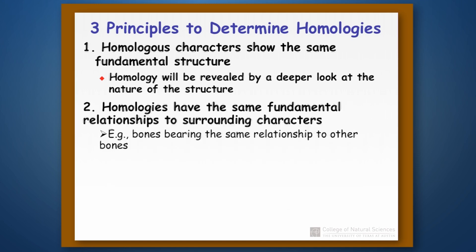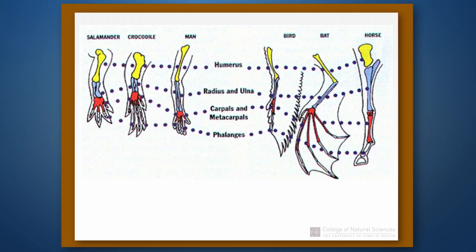The second way to determine whether features are homologies is by looking at whether the underlying structures also have the same relationships to one another. Looking at forelimbs of salamanders, crocodiles, humans, birds, bats, and horses, the same sets of bones appear in exactly the same ordering in all of these different species, which is illustrated here with dots indicating that bone correspondence.